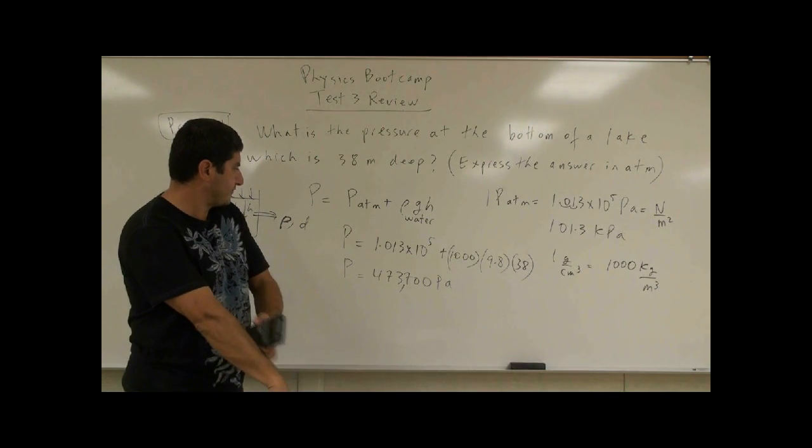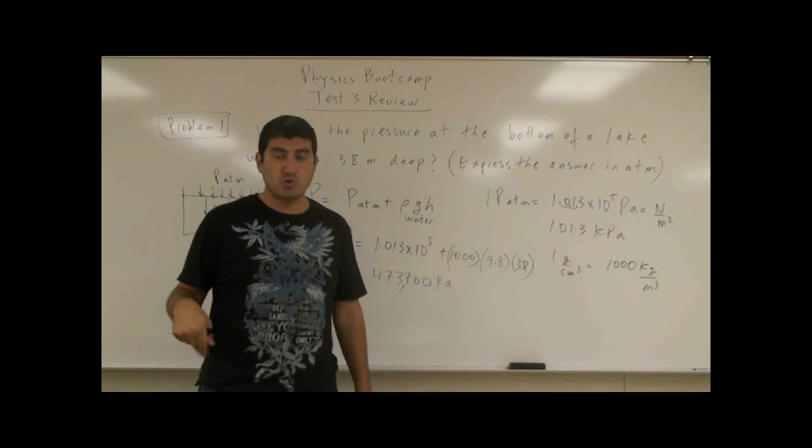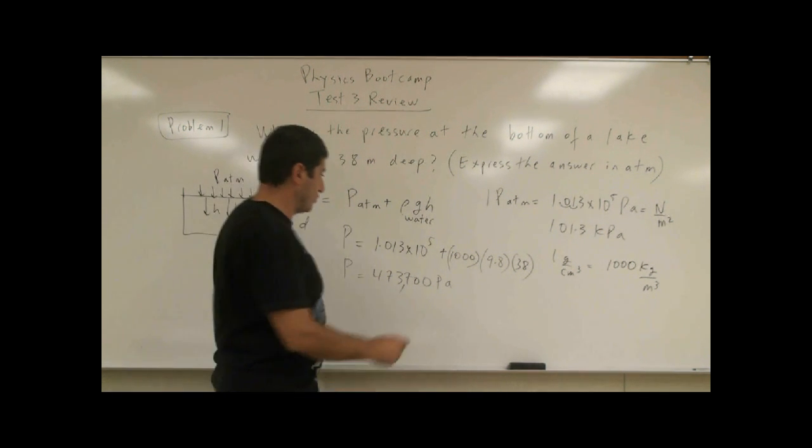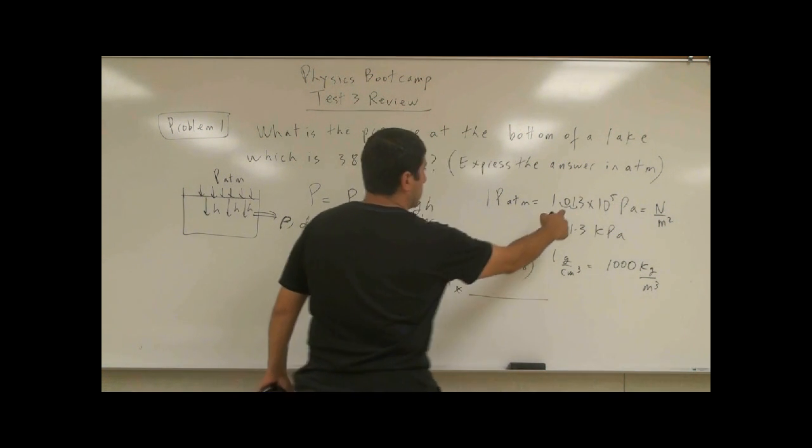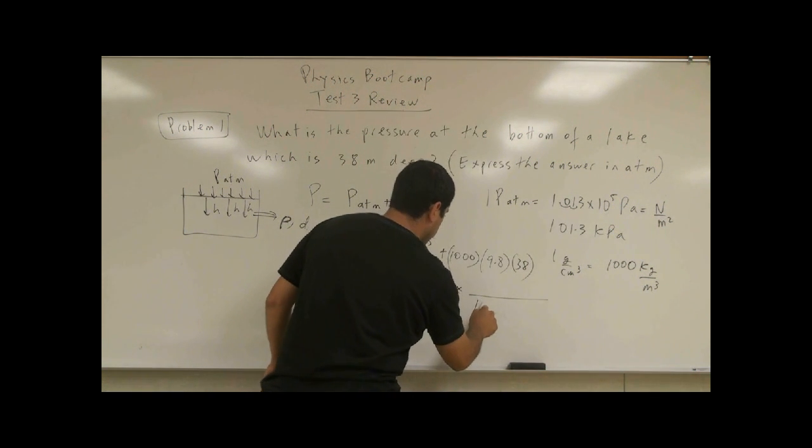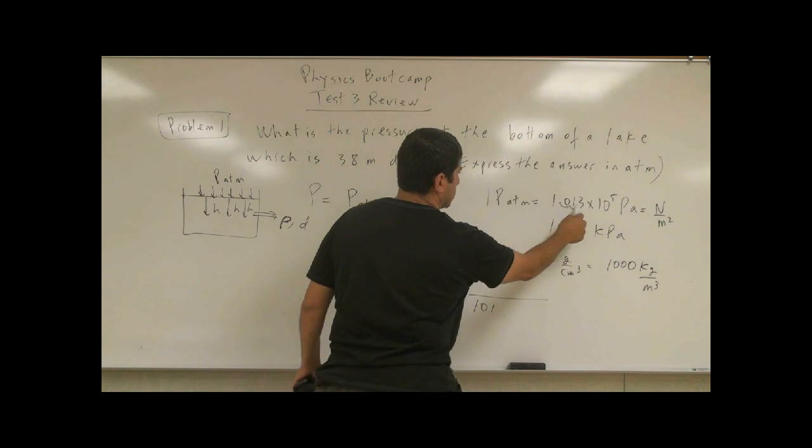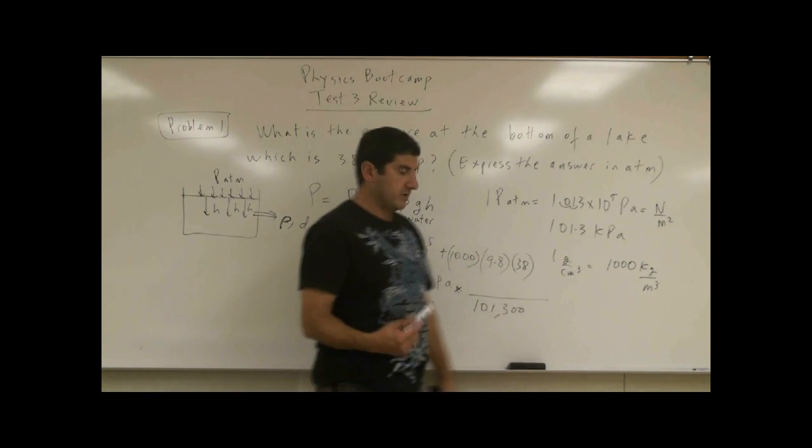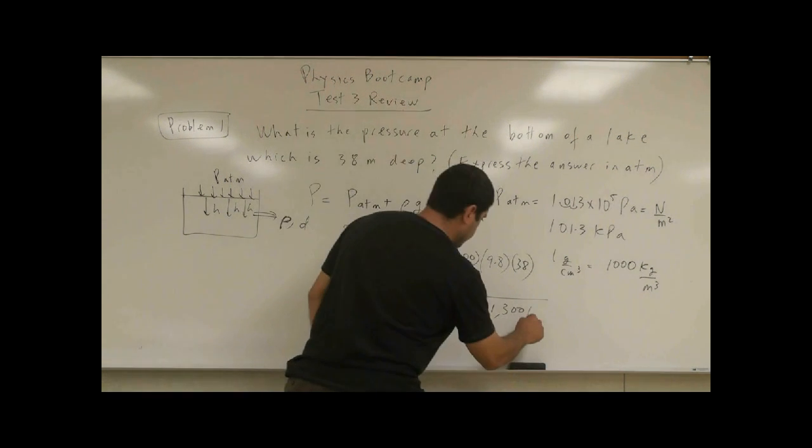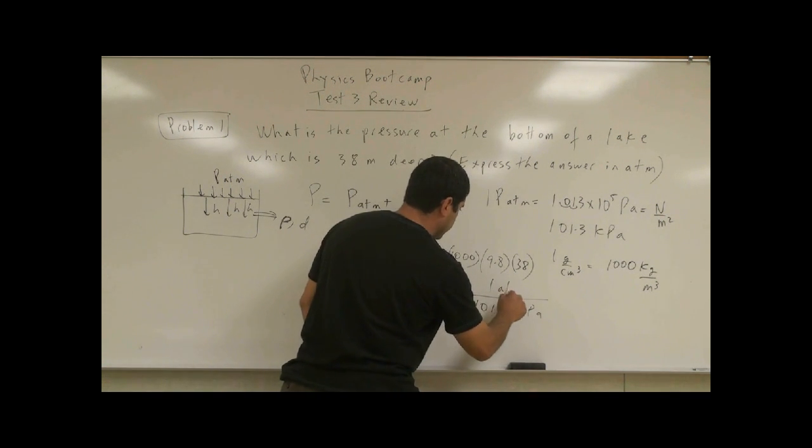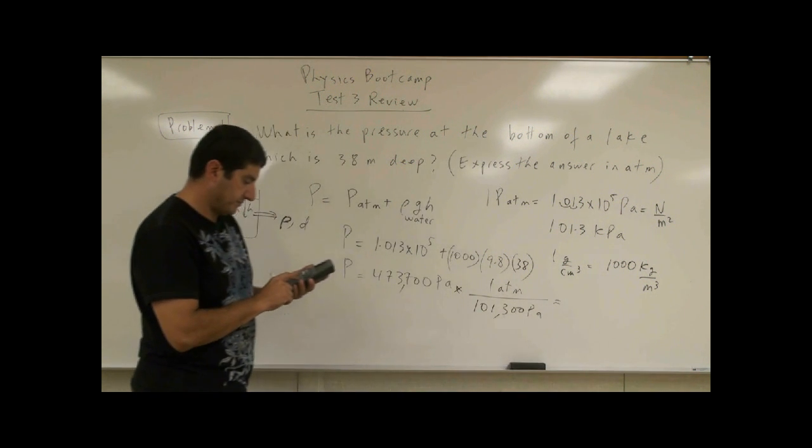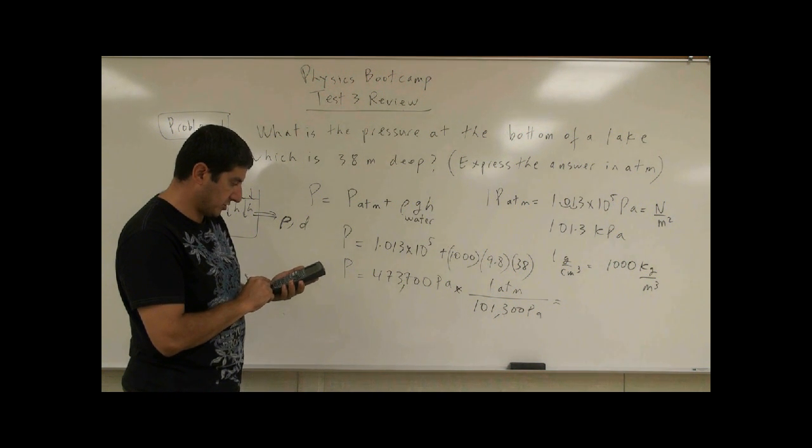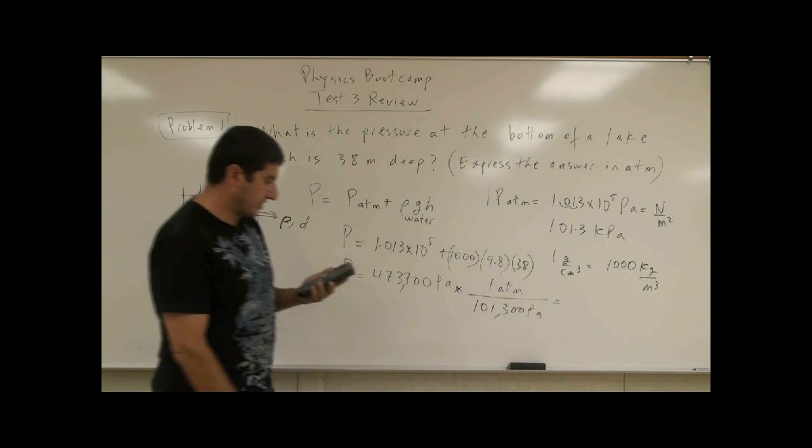So now if we want to convert this back to atmospheres so we can have a relationship, we can say 101,000, 101,300 pascals is one atmosphere. So divide this 101,300, we get 4.676 atmospheres.